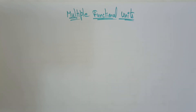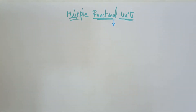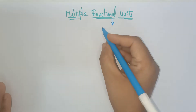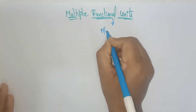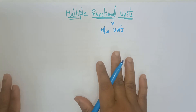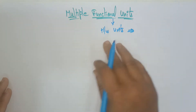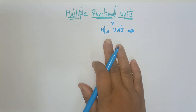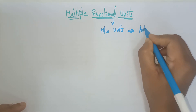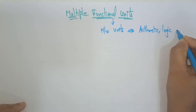Before going to understand the concept of the multiple functional unit, let's have a look at what exactly functional units means. Functional units are nothing but hardware units — the hardware parts that are present in the computer. The hardware units that perform arithmetic, logic, and shift operations.